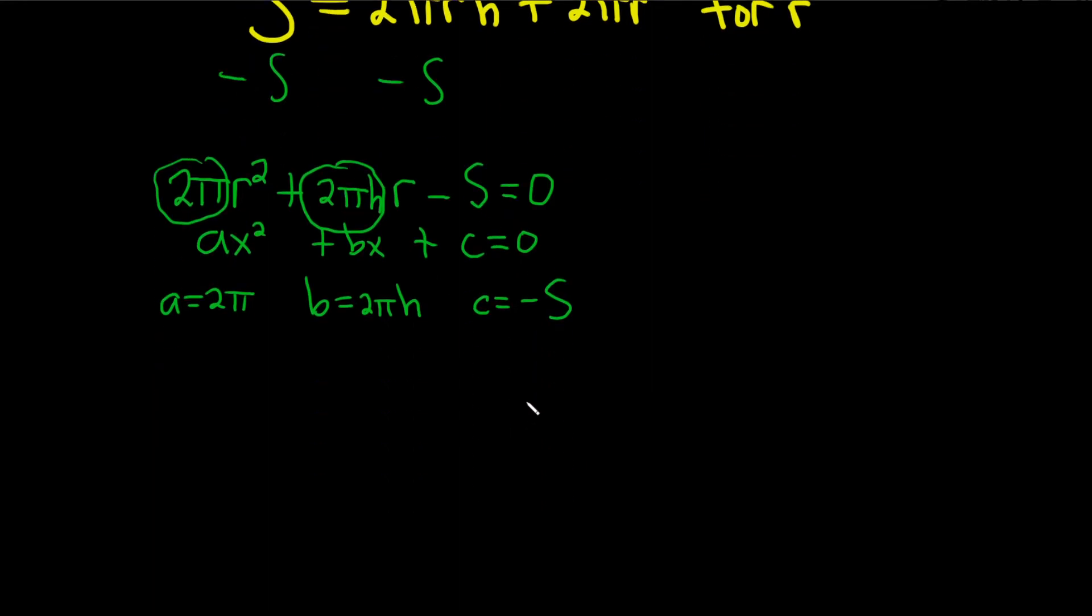So the formula for the quadratic equation, it's called the quadratic formula, and instead of x, it's r, so it's r equals negative b plus or minus the square root of b² minus 4ac. It's all being divided by 2a.